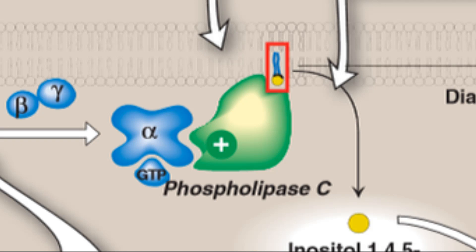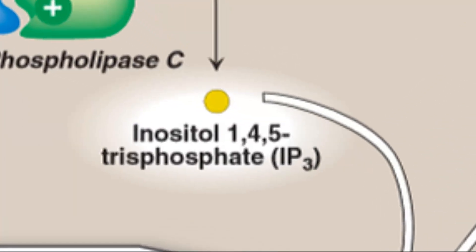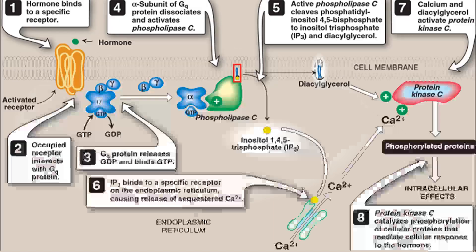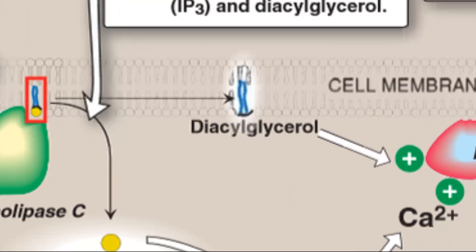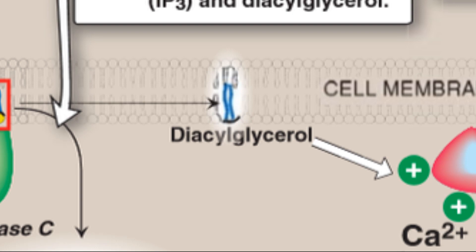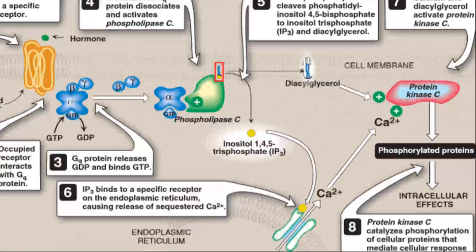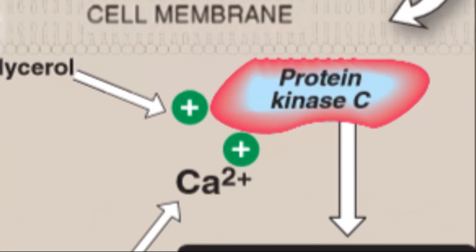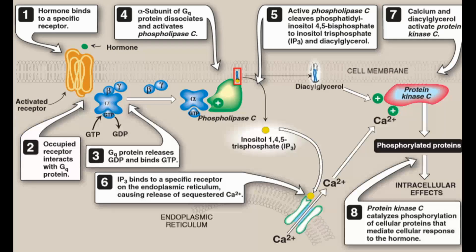The products of this degradation — inositol 1,4,5-trisphosphate (IP3) and diacylglycerol (DAG) — mediate the mobilization of intracellular calcium and the activation of protein kinase C, respectively. These act synergistically to evoke specific cellular responses, and signal transmission across the membrane is thus accomplished. It is important to know that PIP2 degrades into IP3 and DAG, each of which has specific signal transmission roles in the body.